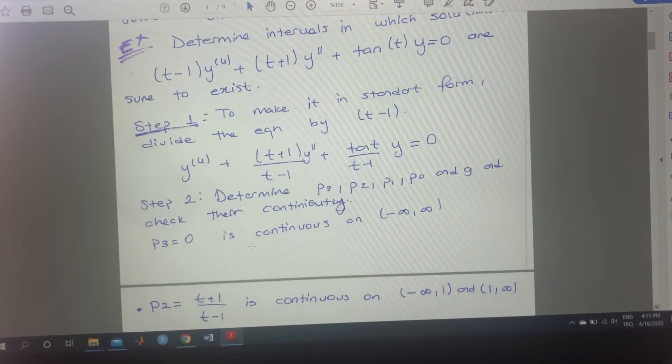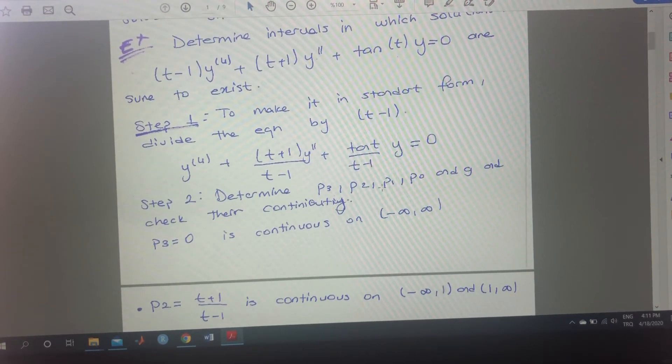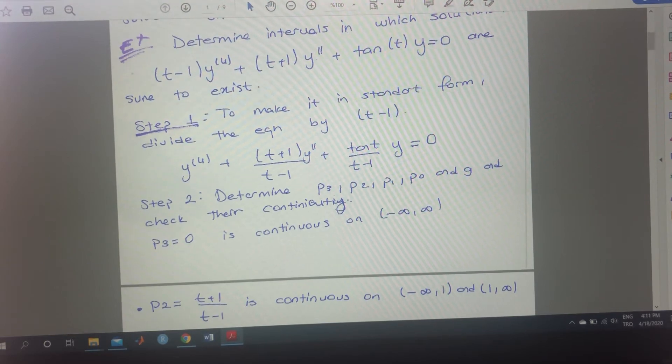Now, after that, we need to make sure that all the coefficients are continuous, right? So let's see that this is 1 and p3 is 0. This is continuous everywhere.